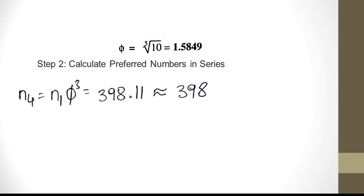n4 is n1 phi cubed. n1 is 100 and 1.5849 cubed turns out to be 398.11. We will round off and make it as 398.